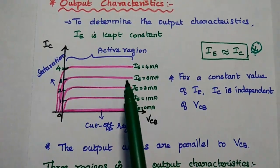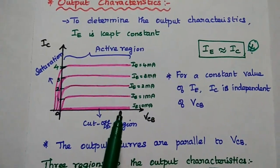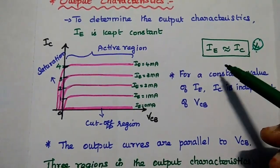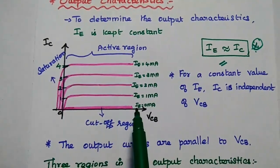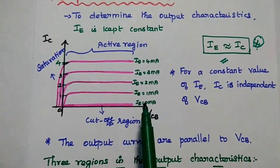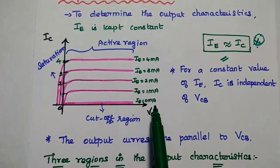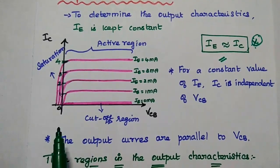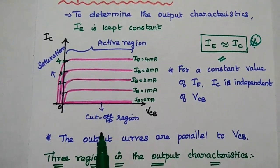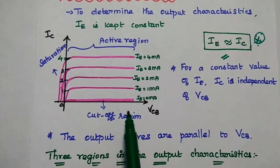In the active region, the emitter-base junction is forward biased and the collector-base junction is reverse biased. At that condition, IE is approximately equal to IC, and we get maximum output — that is called the active region. In the cutoff region, the emitter current is almost zero. Whenever there is no emitter current, the emitter is open, so there is no input and therefore no output. This smaller output is due to the reverse saturation current. This region is known as the cutoff region.